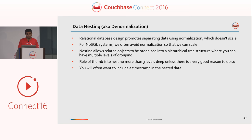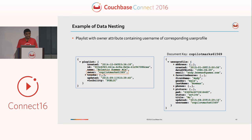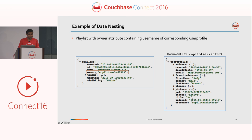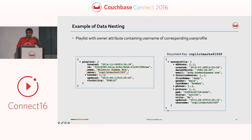More about data nesting and denormalization: you can do multiple nesting. What's the advantage of nesting? Here's a playlist document and a user profile document. The playlist owner is referring to the document key of the user profile. How do you retrieve the document? You retrieve the playlist document first, get the owner ID, and retrieve the user profile document — which means you need two get calls.